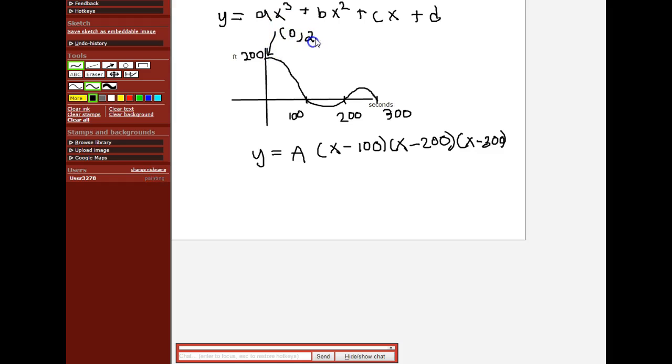So let's work backwards. 200 equals amplitude. Instead of x equaling 0, 0 - 100 is -100, 0 - 200 is -200, 0 - 300 is -300. So our amplitude is going to equal 200 divided by these three numbers multiplied together.